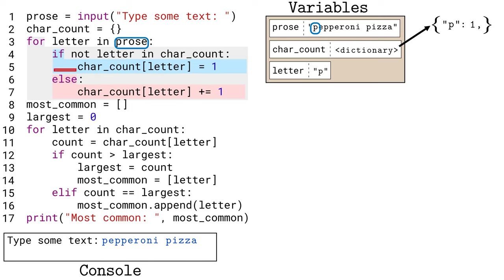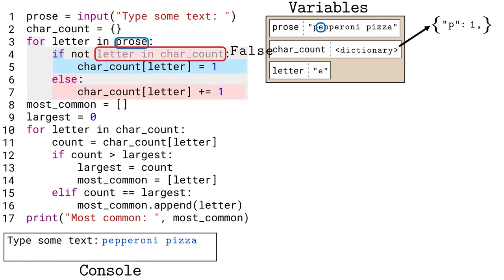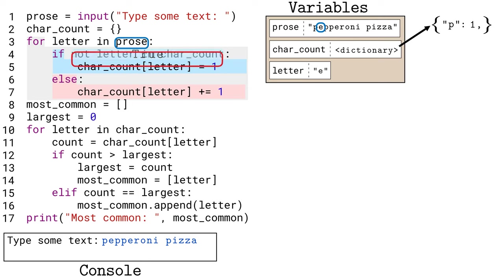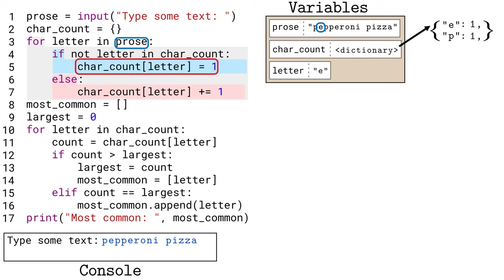There is no more code in the if clause, and because the if statement was true, we skipped the else clause. Python goes back to the top of the loop and steps the letter variable to the next character in 'prose', the lowercase 'e'. We evaluate the condition of the if statement — Python asks if the letter 'e' is a key in the dictionary. It is not, so the 'in' operator evaluates to false. The 'not' operator inverts false to make the condition true, so we run line 5, storing the value 1 with the key 'e'.